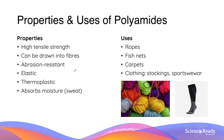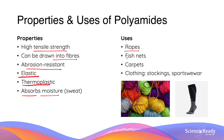The properties of polyamides or nylon are quite similar to those of polyesters. They have high tensile strength and can be drawn into fibers. They are also abrasion resistant, elastic, and thermoplastics that can be melted and reshaped. A very useful property of polyamides is that they can absorb moisture. As a result, nylons are found in ropes, fishing nets, carpets, and select clothing such as stockings and sportswear — where the ability to absorb moisture like sweat is particularly valuable.